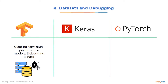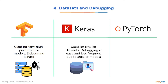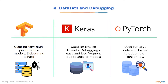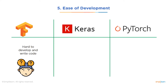Next: datasets and debugging. TensorFlow works with large datasets due to its high execution speed, but debugging is hard due to its complex nature. Keras only works well with small datasets as its execution speed is low, though programs in Keras require less frequent debugging since they are relatively simpler. PyTorch can manage high-dimensional datasets for high-level tasks and is easier to debug than both Keras and TensorFlow.